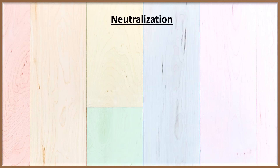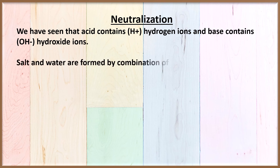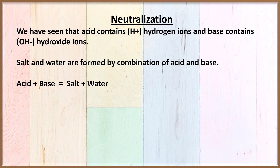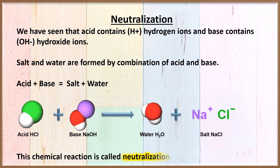We now come to a very important reaction between acids and bases, which is called neutralization. An acid contains H+ or hydrogen ions and a base contains OH- or hydroxide ions. When we combine an acid and a base, salt and water are formed — so acid plus base gives salt and water. For example, hydrochloric acid and sodium hydroxide give NaCl, which is common salt, sodium chloride, plus water. This reaction is called neutralization.